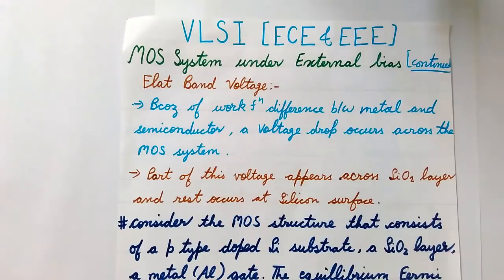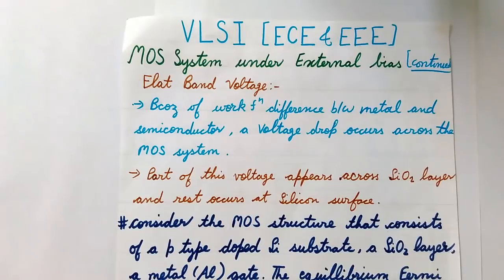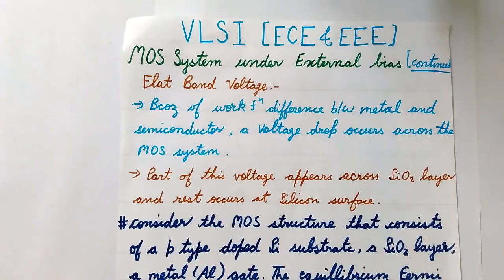Hello students, welcome to Smart Engine Tutorials. In the last video we discussed the MOS system under external bias, covering three operating conditions: accumulation, depletion, and the third one which is surface inversion. Today we'll be discussing surface inversion, but before that we'll be talking about the term flat band voltage.